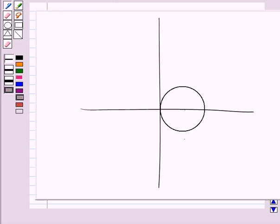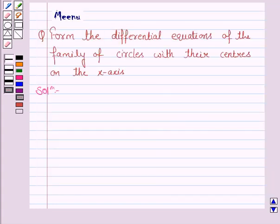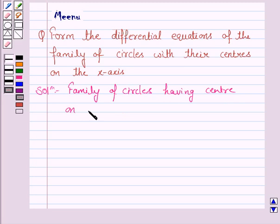So suppose the center of the circle is (a, 0). Right? Now, the family of circles having center on the x-axis